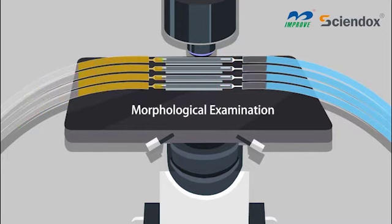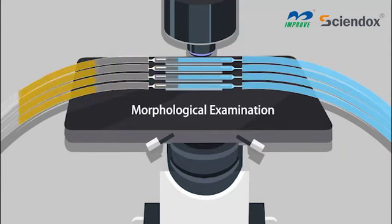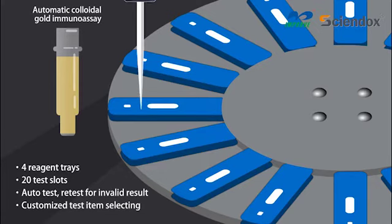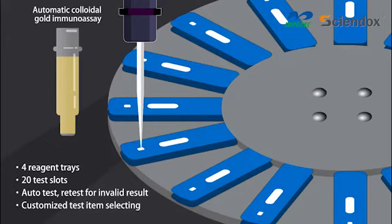Automatic morphological examination with 4 channels of flow counting pool. Custom setting for different specimens. We have 4 reagent trays and 20 test slots for the full automatic colloidal gold immunoassay.